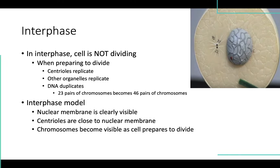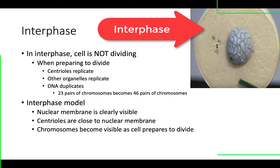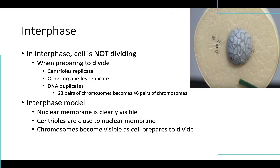On the interphase model, when we look at our model in class, it just looks like a regular cell. You don't see any of the other organelles, but you see the nucleus with the nuclear membrane, and you see a pair of centrioles. Those centrioles have already actually replicated, so there are two pairs of centrioles. So we can tell this cell is in interphase.